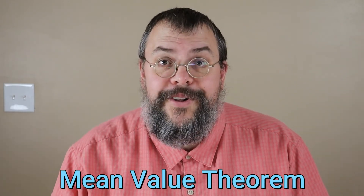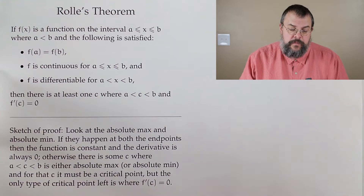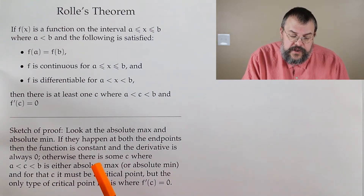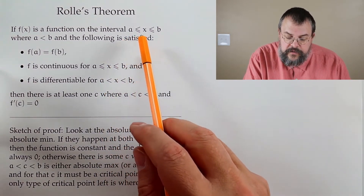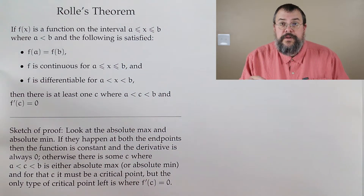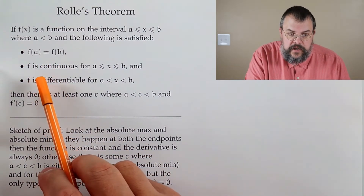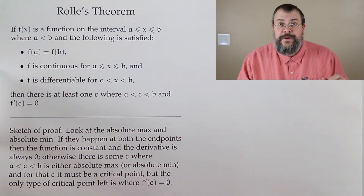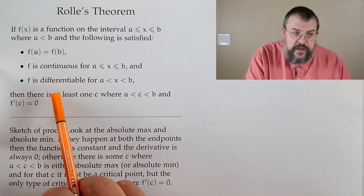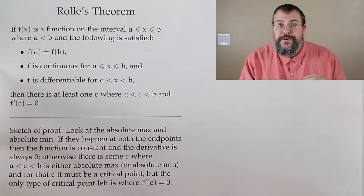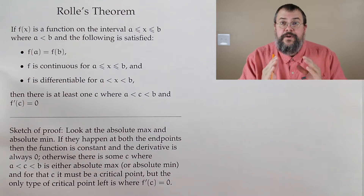We'll start out on a bit of a roll — in particular, we're starting with what's called Rolle's Theorem. It says the following: suppose you have a function on a closed interval from A to B. There are a couple of basic assumptions: the endpoints have the same function value, the function is continuous — continuous equals nice — and the function is differentiable between the endpoints. If all these things are true, then there is at least one C between the two ends where the derivative equals zero.